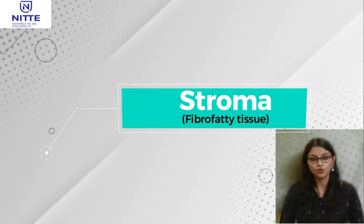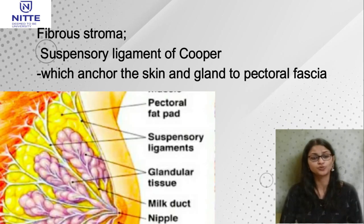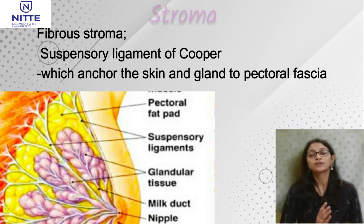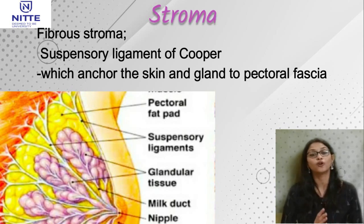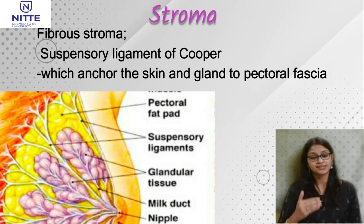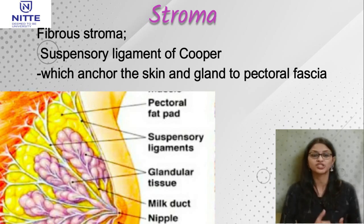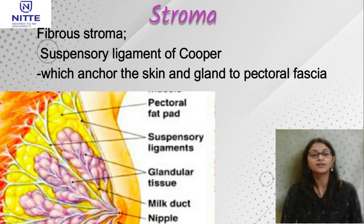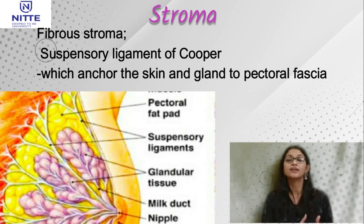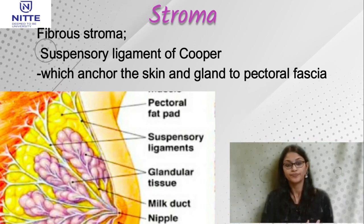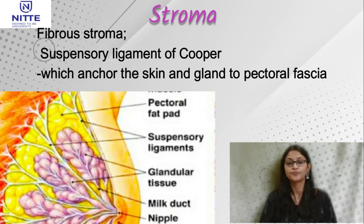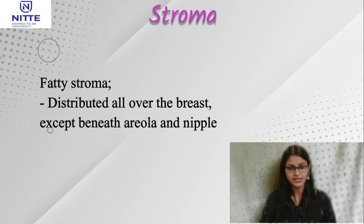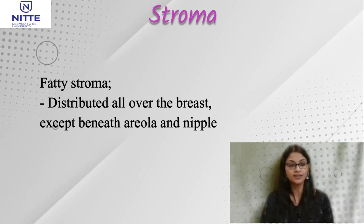The stroma is a fibro-fatty tissue. The fibrous stroma forms the suspensory ligament of Cooper, which anchors the skin and the gland to the pectoral fascia. As age advances these fibrous tissues become weak, causing the mammary gland to descend slightly. The fibro-fatty stroma is distributed all over the breast except beneath the areola and the nipple.